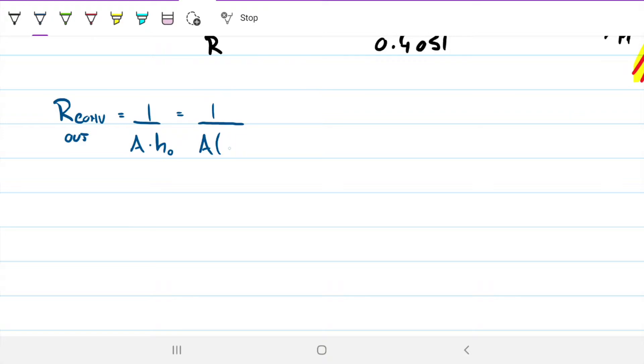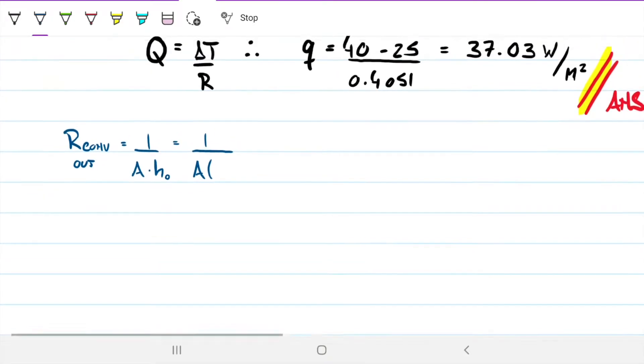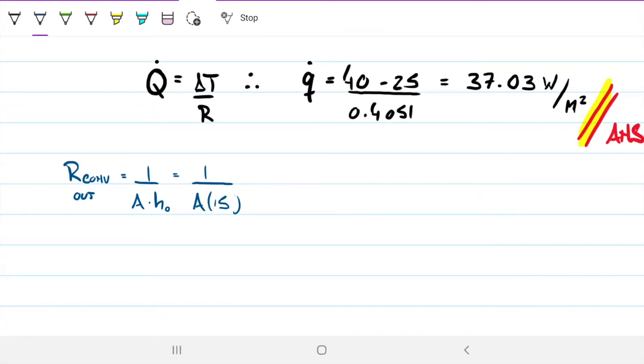So the outer one coefficient is 15. This means that this is going to be 0.0667 over the area. But because we have multiplied by the area there, we still have that meter squared here on the top.